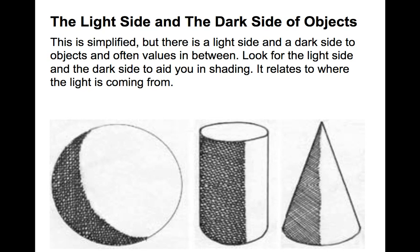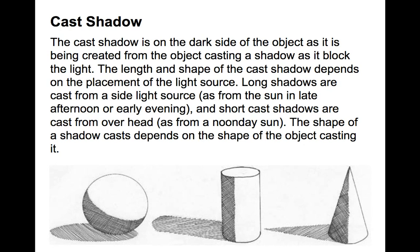The light side and the dark side of objects: Simplified, there's basically a light side and a dark side to things. If you look for which side is the absolute lightest and which side is the darkest, this can really help you when you shade.